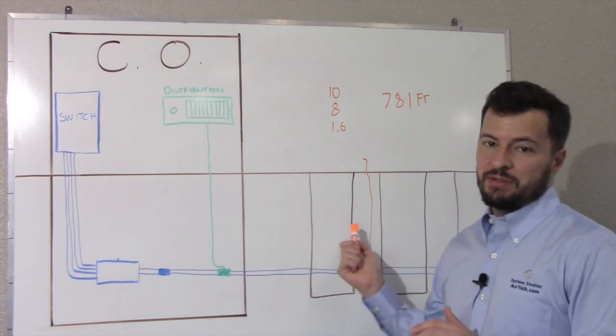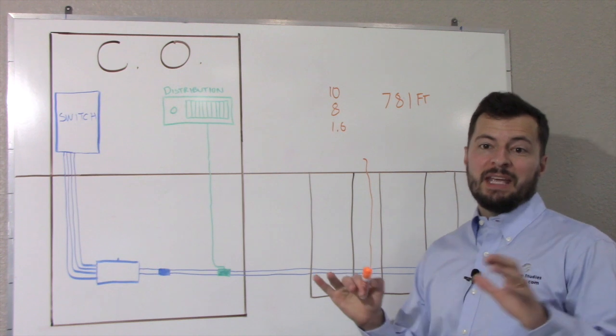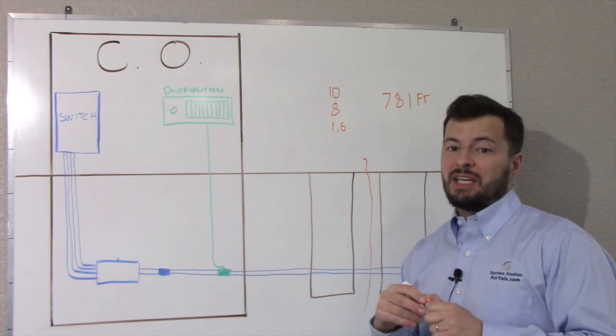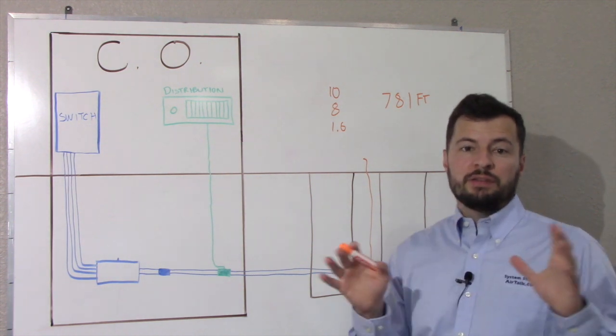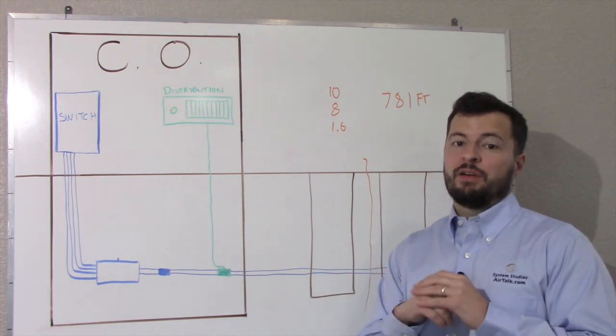Only then do we check these manholes out here. Remember, we stay within the area of our zero leak projection. In our case, the zero leak projection resulted in 781 feet, so we will only follow the cable that far from the office.